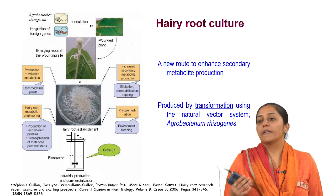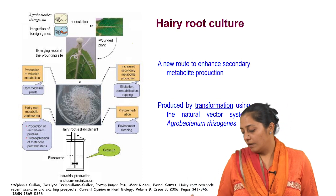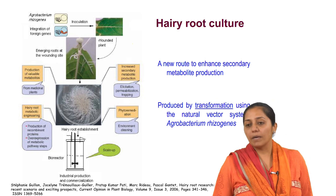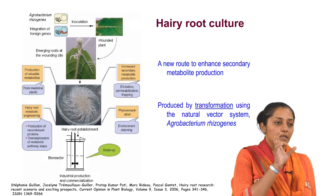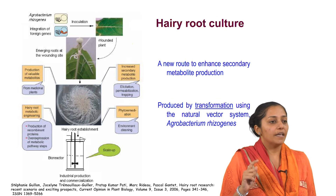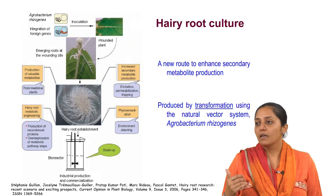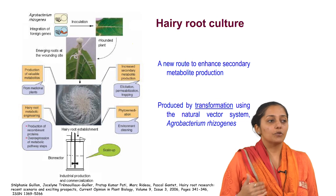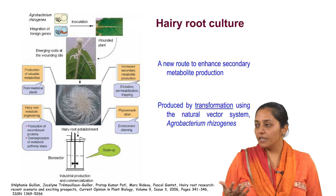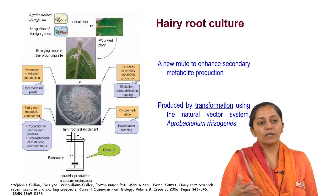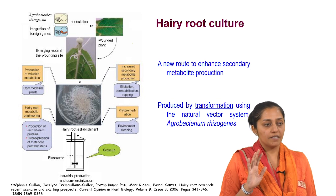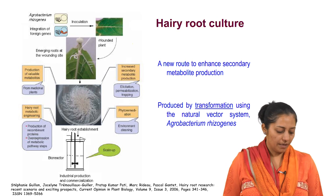For metabolic engineering and even for heterologous expression of proteins, hairy root cultures become a more biosynthetically and biochemically stable system because the T-DNA gets stably integrated into the plant chromosome. Growth rate-wise, hairy root cultures being organized structures are slow in comparison to plant cells, because plant cells are dispersed and have more nutrient availability. So specific growth rates are higher in plant cells. But because biosynthetic capability and stability is greater, people prefer hairy root cultures.